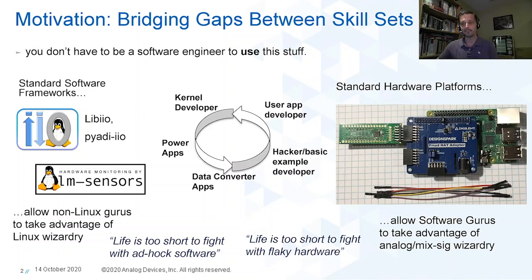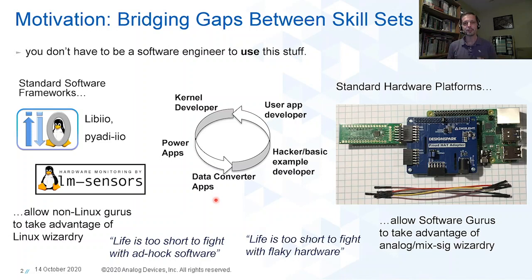Using a common platform like Raspberry Pi and this little adapter board allows us to replicate systems on opposite corners of the globe very easily, with confidence that the hardware matches up. It takes a lot of different skill sets to design complicated systems — kernel developers, power application engineers, data converter application engineers. We want all of these people on the same page, both in terms of software and hardware. My own skill set as your presenter is hacker slash basic example developer.